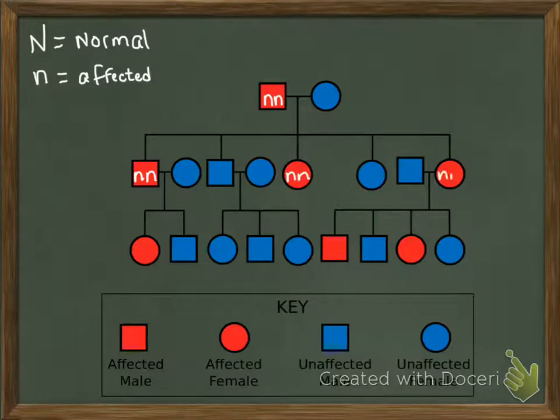Let's look at our parents. Dad is little n, little n. Mom is obviously going to have at least one big N, because otherwise she wouldn't be normal. Now, in order for mom to have three offspring that are affected, she's going to have to carry a recessive trait also. That would mean that mom has to be heterozygous.